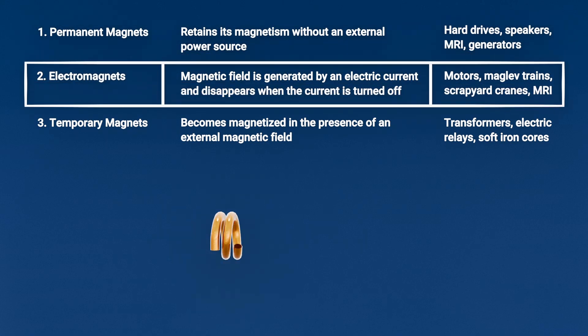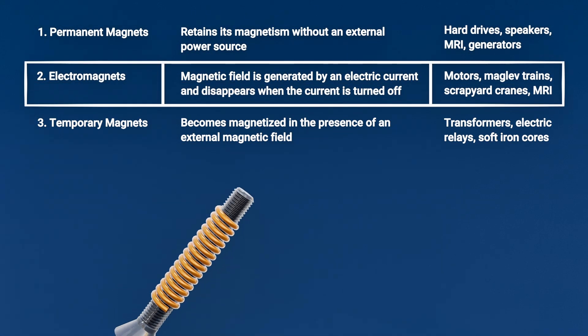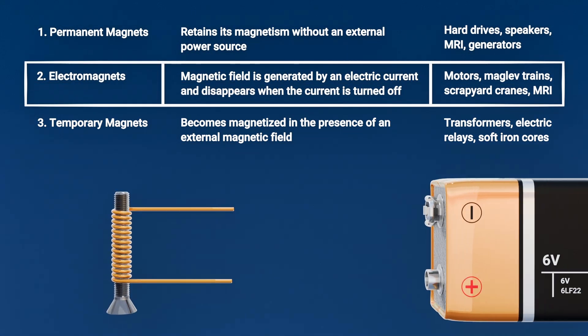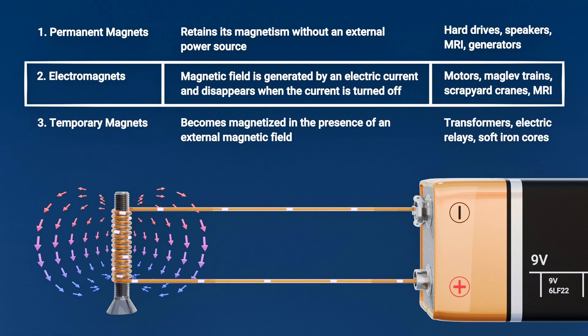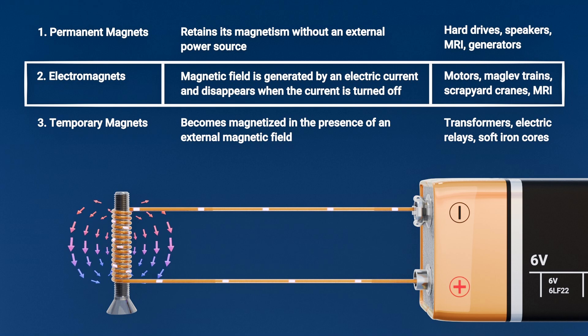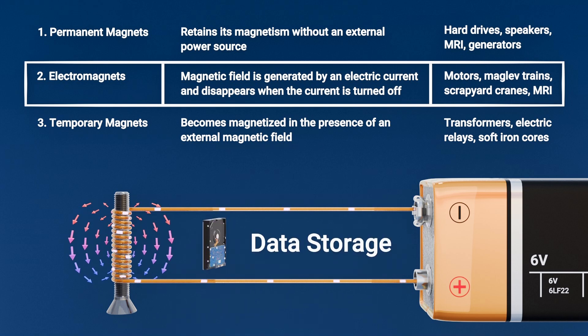2. Electromagnets. These are created by passing electric current through a wire coil. The strength of the magnetic field can be controlled by adjusting the current, making electromagnets essential in applications in data storage.